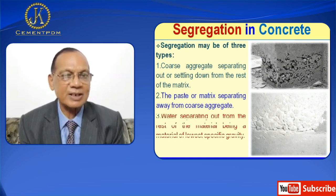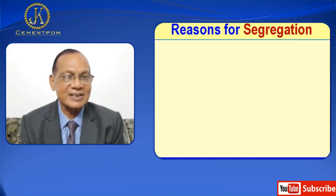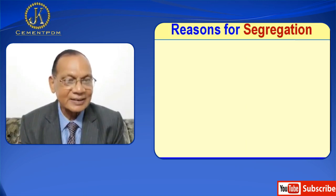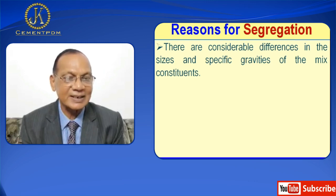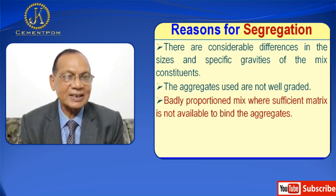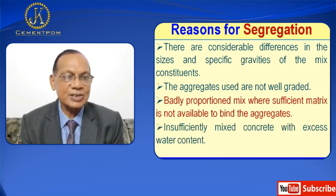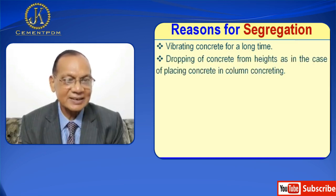Now I will discuss what are the reasons for segregation. There are a number of things. There are considerable differences in the sizes and specific gravities of the mixture. The aggregates used are not well graded. Then a badly proportioned mix where sufficient matrix is not available to bind the aggregates. Next is insufficiently mixed concrete with excess water content. Vibrating concrete for a very long time. Next is dropping of concrete from heights, and in the case of placing concrete in column concreting.